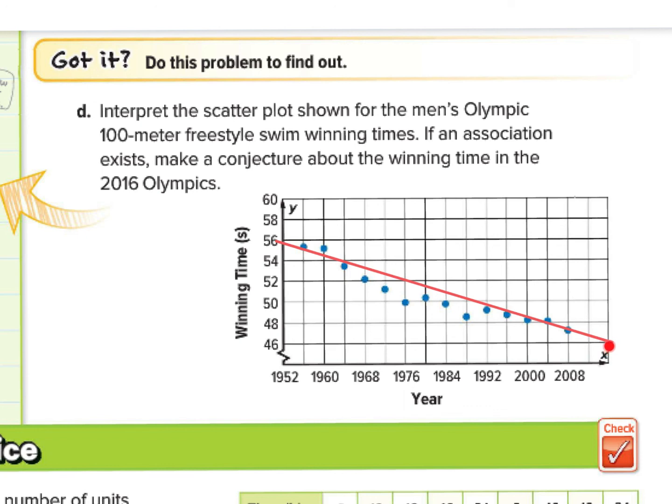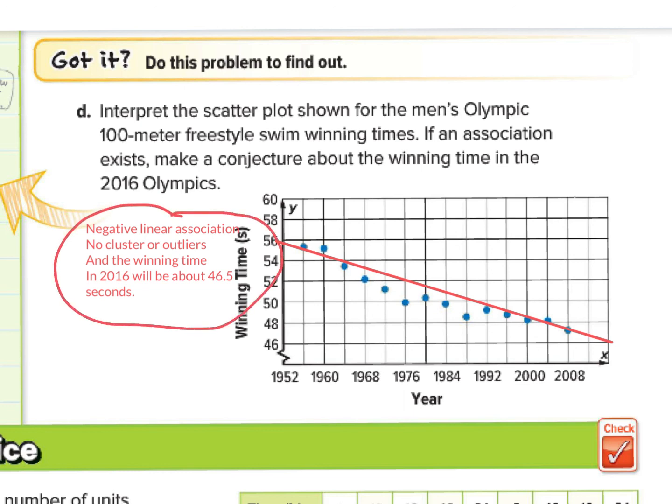So what can we say about this scatter plot? Well, we can say that it has a negative linear association with no clusters or outliers. And if this pattern continues, the winning time in 2016 should be about 46.5 seconds. Please pause the video and make sure you copy this down, because this is the information I will be looking for you to provide in the following answers in the guided practice, independent practice, and any skills practice or extra practice that we do.